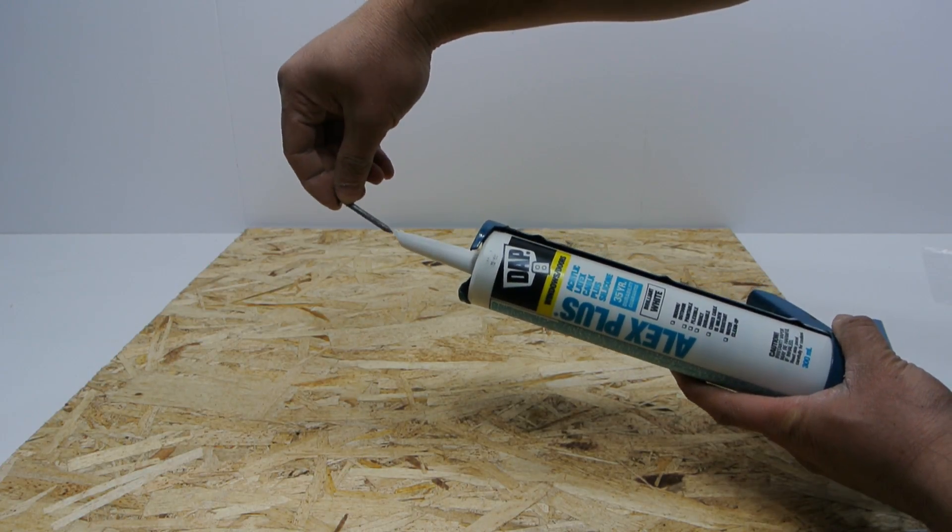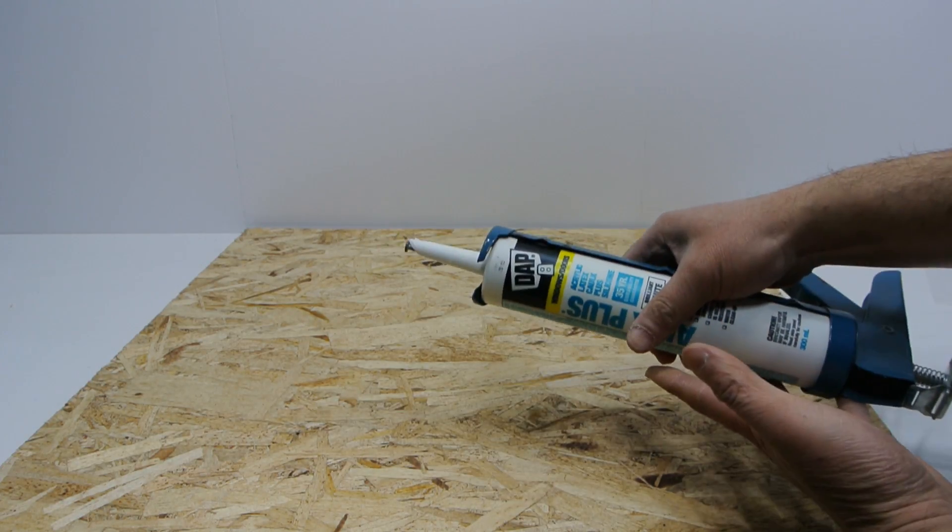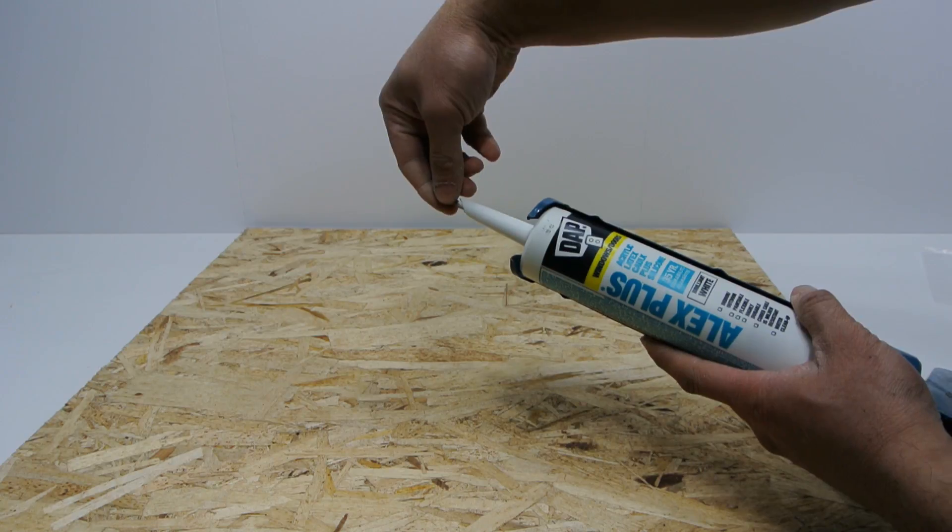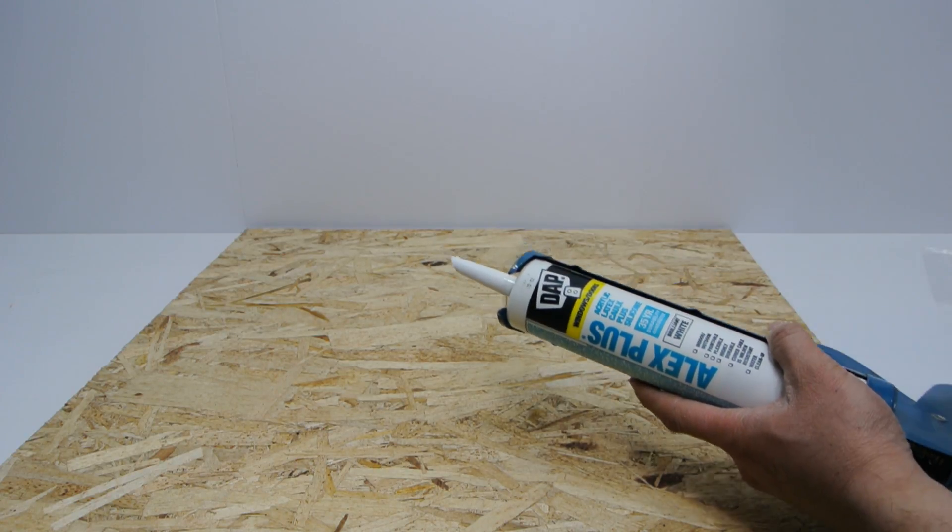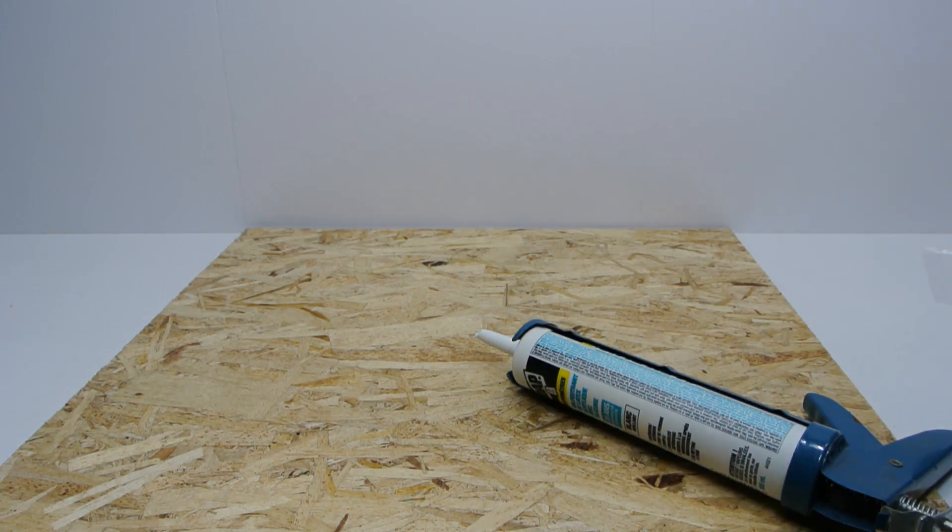The traditional way is to use a nail to plug the end of the nozzle. The problem with this method is if the caulking is stored for any long period of time, the tube dries out and makes the tube unusable.